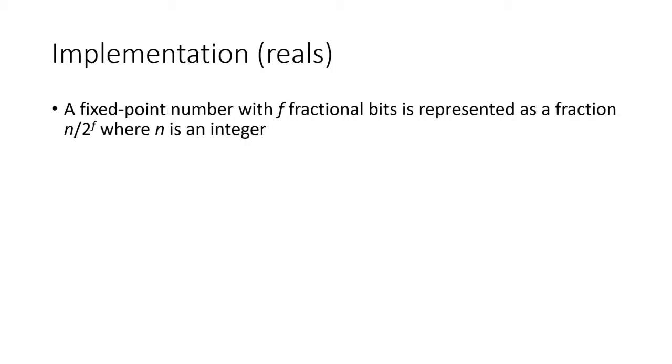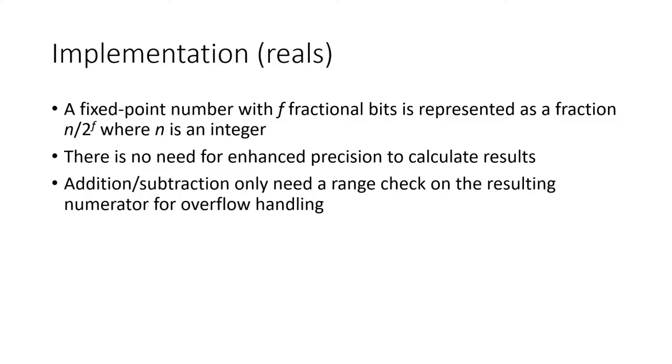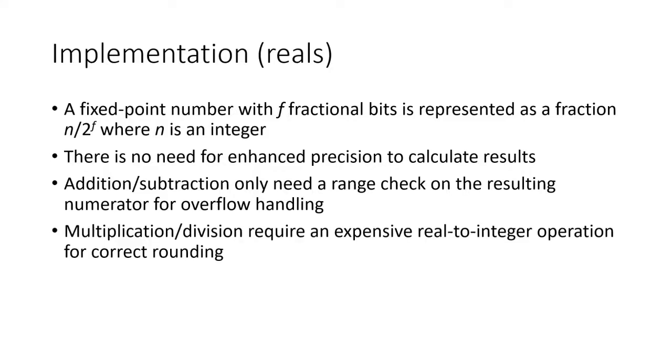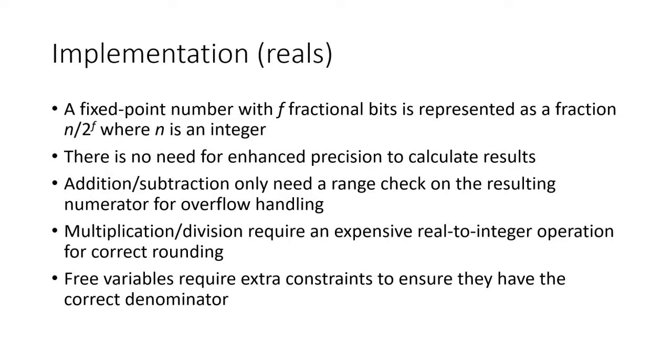In the real encoding, we represent fixed-point numbers as rational numbers which are equivalent to a fraction with a denominator of 2 to the f. One benefit of computing over reals is that the operations we use are always exact. We need only check that the numerator of addition and subtraction is in range. While multiplication and division are straightforward to compute as rationals, these operations require an expensive conversion to an integer in order to properly round them. Free variables are constrained to be fractions with the correct denominator. If this is not the case, then erroneous satisfying models may be used.